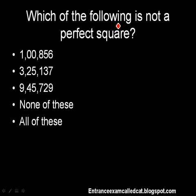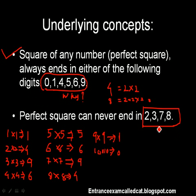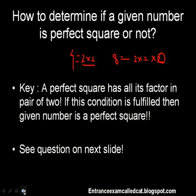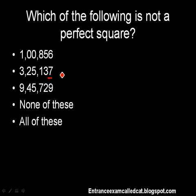Which of the following is not a perfect square? We just saw that a perfect square can never end in 2, 3, 7, or 8. So the number ending in 7 is not a perfect square. But hang on — let us analyze the other options too.